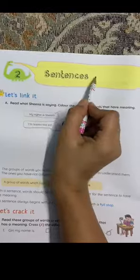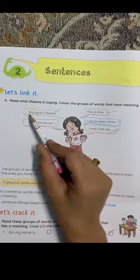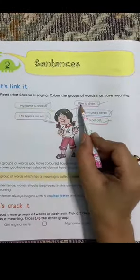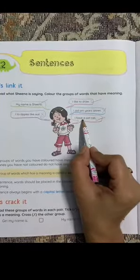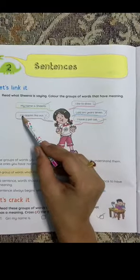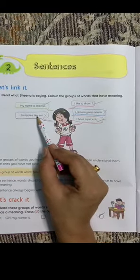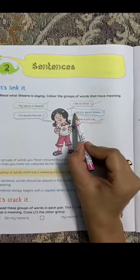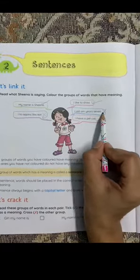Chapter number two: sentences. See here, my name is Sheena, I like to draw, I have a pet cat. One, two, and three, these are the sentences. I to apply apples like eat I, old am your seven - this one and this one, not a sentence.